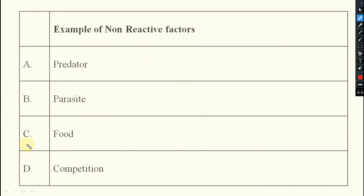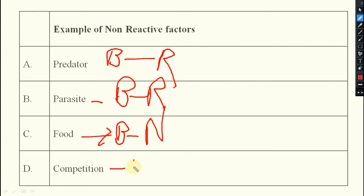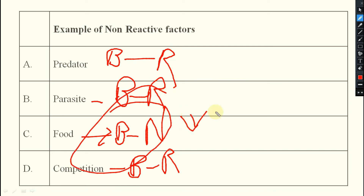Example of non-reactive factor: predator — this is your biotic, meaning reactive. Parasite — biotic, reactive. Food — biotic, but non-reactive. Competition — biotic and reactive. These are the only exceptional cases found in this concept, so please remember them.